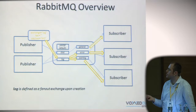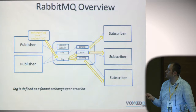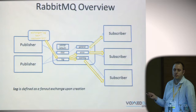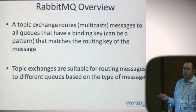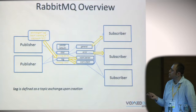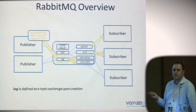Fanout exchanges work by multicasting messages - when you deliver a message to a fanout exchange, it is sent to all queues that have at least one binding to that exchange. Topic exchanges also work in a multicast manner, but the difference is that matching is done on the key, so the message is routed to one or more queues based on that key rather than all bound queues.